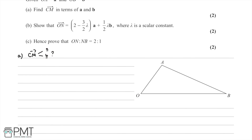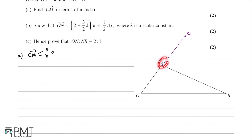We're told that point C is such that the vector OC is going to be two lots of O to A. So we know we have O to A, and then it continues to extend and that will be our point C. Drawing this on our diagram — maybe not exactly to scale but it gives a rough idea — this is going to be point C. Next, we're told that point M is going to be the midpoint of A and B, which will be around here.